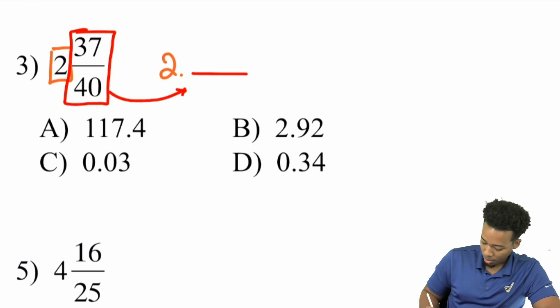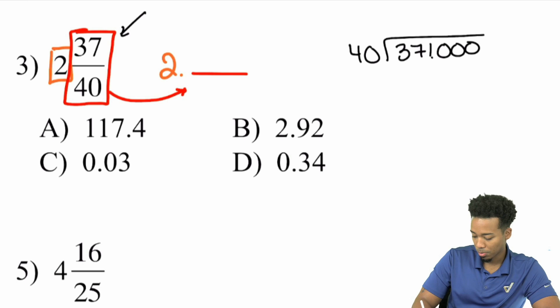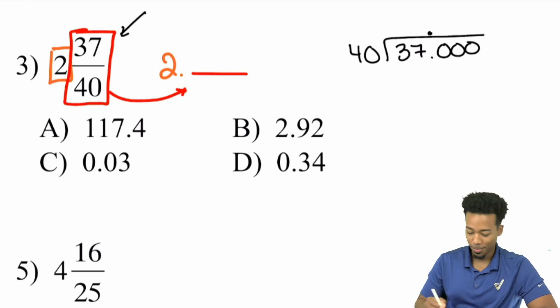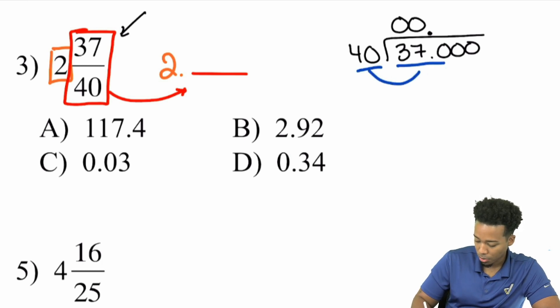So I'm going to go ahead and say right here, 37 divided by 40. How do I do that? Well, write out the long division. And then put the zeros, as many as you need. And then put the decimal right above it. Right there. So here we go. So 40 can't go into 3. 40 doesn't go into 37. So that's where those zeros come in. But over here, check this out. How many times does 40 go into 370?